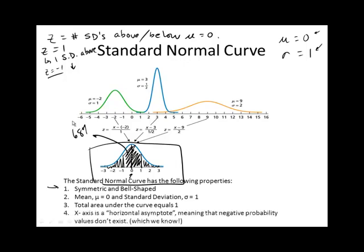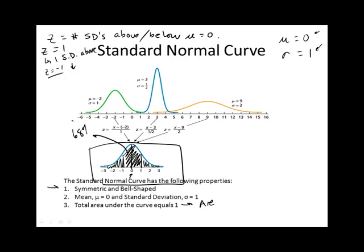This is something I'm going to mention many times in class — the area under the curve is the same as percentages, which is the same as probabilities. So probability, percentage, and area are all interchangeable when we're talking about the normal distribution or standard normal distribution.